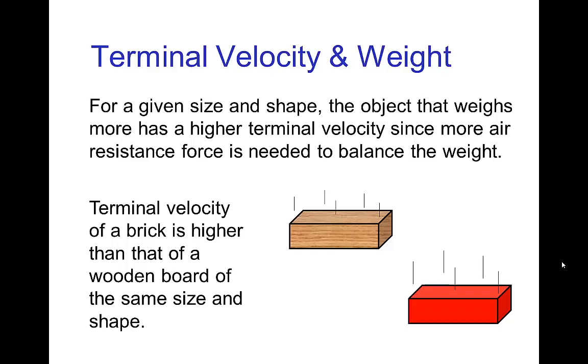If we have a block of wood that's the same size and shape as a brick, the brick weighs more, and so when we drop the two, the terminal velocity for the wooden block is going to be slower than the terminal velocity for the brick, which will be higher.